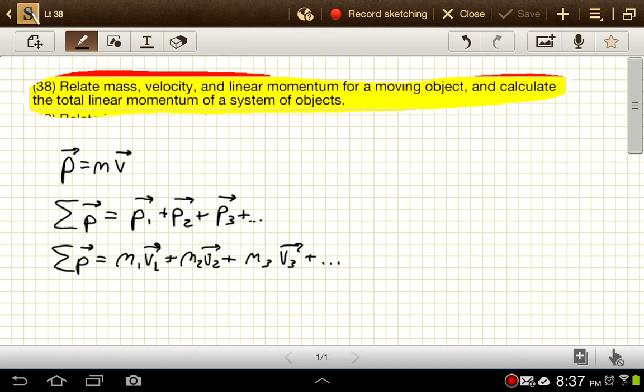It's going to be the product of mass and velocity. It's important to keep in mind that mass is a scalar quantity, velocity is a vector quantity. Whenever we multiply a vector by a scalar, we get a vector that's in the same direction as our starting vector. It just has a different length, a different magnitude.